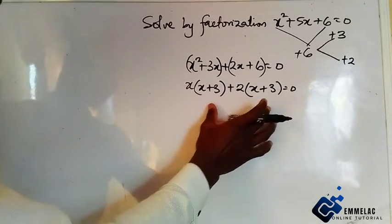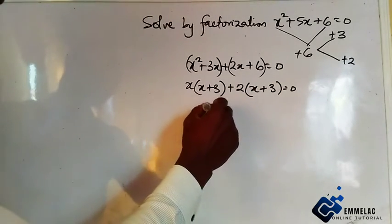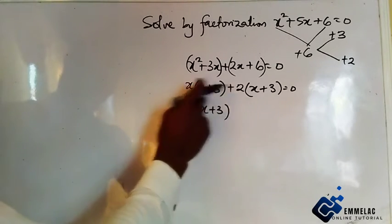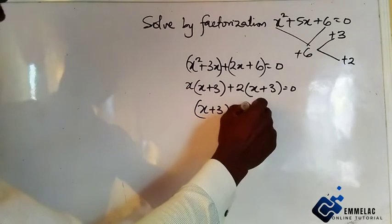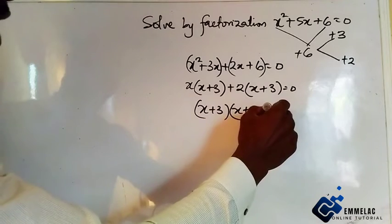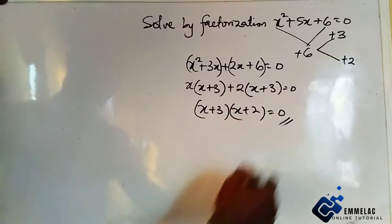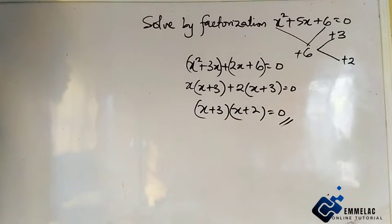So here now you can see we can get two factors. Here we have x plus three and x plus two. These are the factors. Thank you and God bless you.